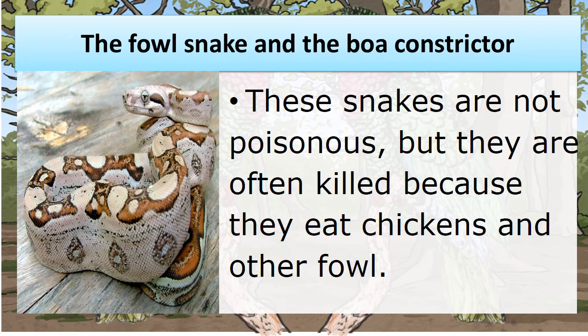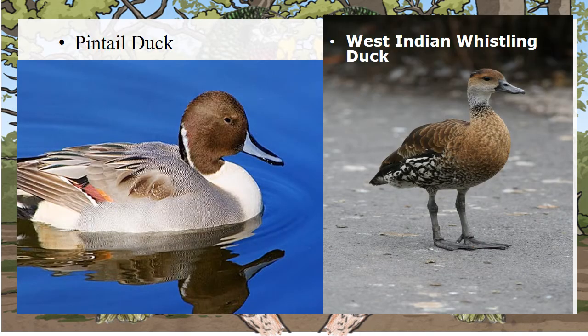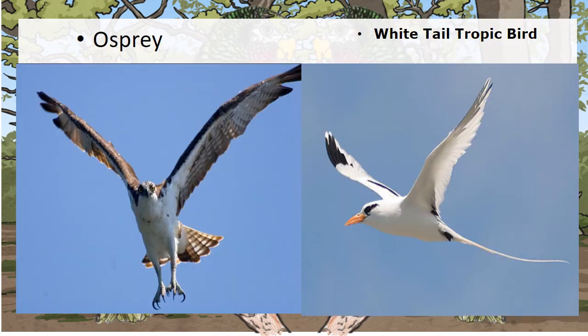The Fowl Snake and the Boa Constrictor. These snakes are not poisonous, but they are often killed because they eat chickens and fowl. The Pintail Duck and the West Indian Whistling Duck are some of the birds, along with the Osprey and the White-tailed Tropical Bird, that can all be seen in the Bahamas.